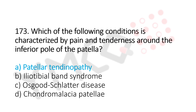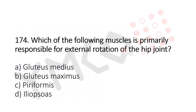Let's move to question number 174. Which of the following muscles is primarily responsible for external rotation of the hip joint? Option A, gluteus medius. Option B, gluteus maximus. Option C, piriformis. Option D, iliopsoas. And the answer is Option C, piriformis.